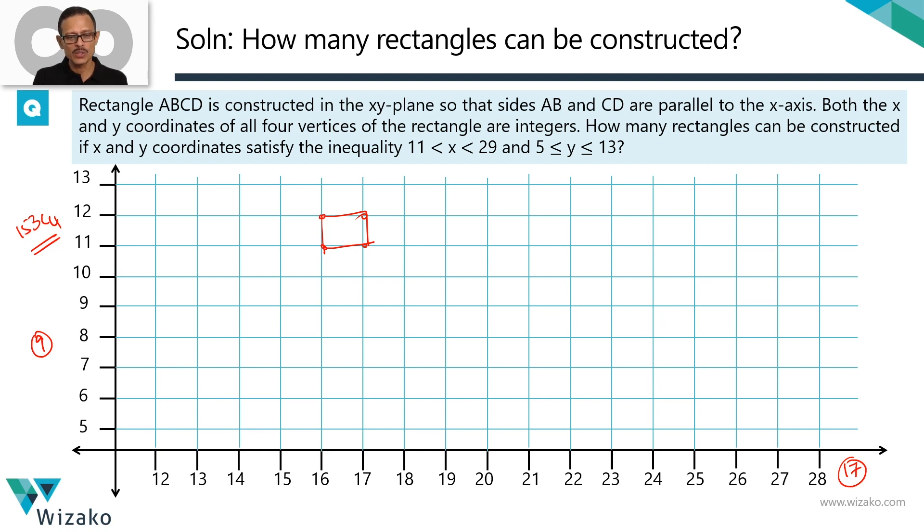Hold on. We just went about it that way. Let's say I pick a point here. I pick a second point here. Pick a third point here and pick a fourth point here. If I join these, obviously I'm not going to get a rectangle. So picking any four out of these 153 points is not the answer. So one of the red herrings that we had, answer option B can definitely be eliminated.